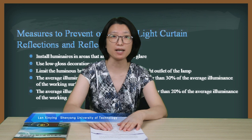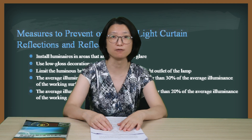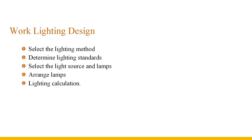Indoor work lighting is mainly to meet the requirements of visual work. The steps of task lighting design are: first, select the lighting method; second, determine lighting standards; third, select the light source and lamps; fourth, arrange lamps; fifth, perform lighting calculation.